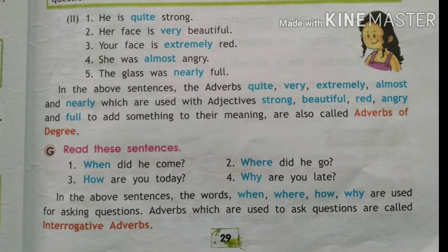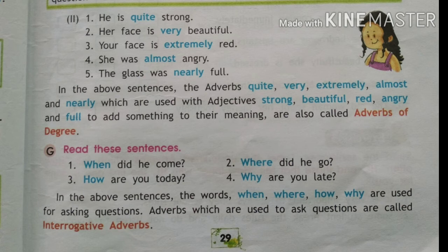Now read these sentences: when did he come? Where did he go? How are you today? Why are you late? The words when, where, how, and why are used for asking questions. Adverbs which are used to ask questions are called interrogative adverbs. You will know it is an interrogative adverb because the sentence ends with a question mark, and the WH words — when, where, how, why — are asking questions. In total we have six kinds of adverbs.